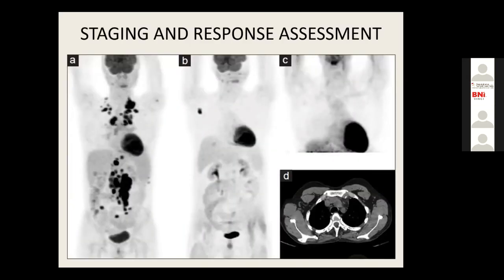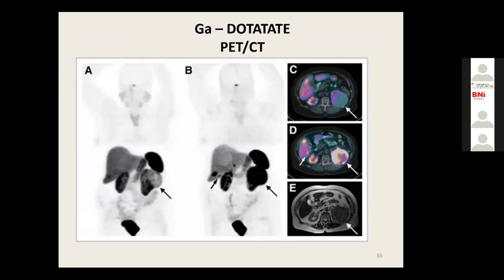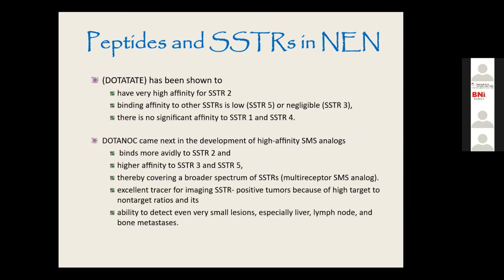For staging and response assessment, we commonly use PET-CT at our site for breast cancer and different cancers. We also use Gallium-68 DOTATOC PET-CT for somatostatin receptor-based imaging — generally using the jelly scan, which shows highest affinity for SSTR2 and high affinity for SSTR3 and SSTR5.